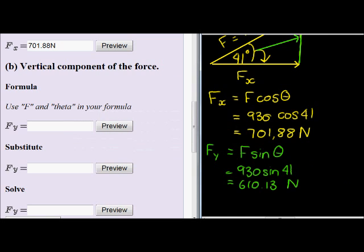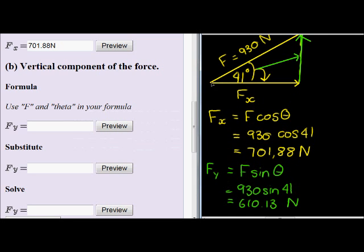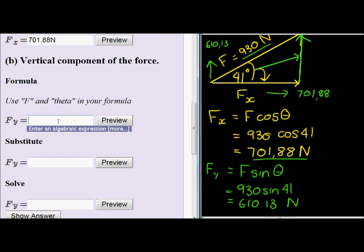So again, what that means is that if a force of 930 is applied at 41 degrees, 701 Newtons are being applied horizontally, and 610 N are being applied vertically. That means if someone was pulling in this direction with 701.88, and someone was pulling in that direction with 610.13, the resultant vector - in other words, the effort together - will be that. That's another way of looking at it.